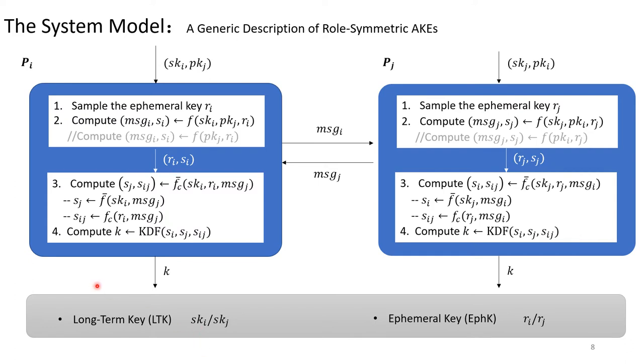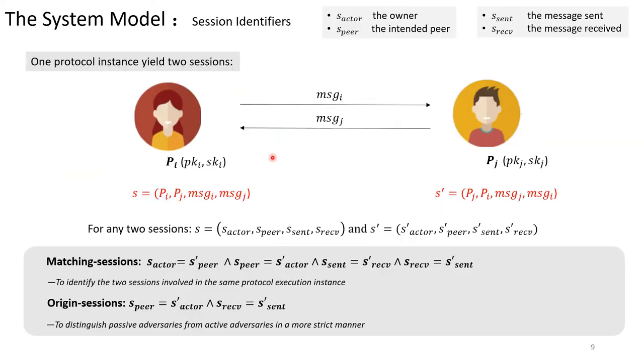There exist two types of important keys. Long-term key like Si, Sj, SKi, SKj and ephemeral key like Ri and Rj. Each protocol instance will yield two sessions. To identify a session, four variables are used: actor, peer, sent, received to denote the owner, the intended peer, the message sent and the message received respectively.